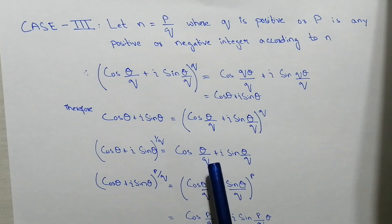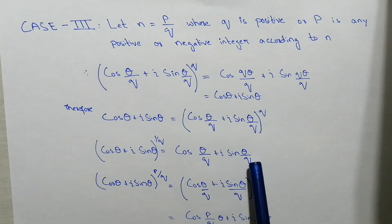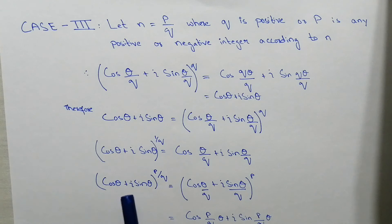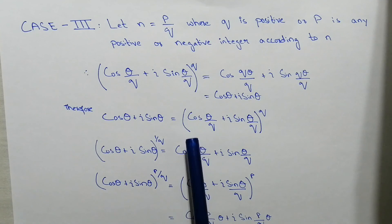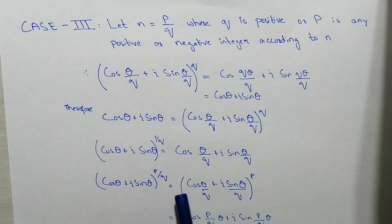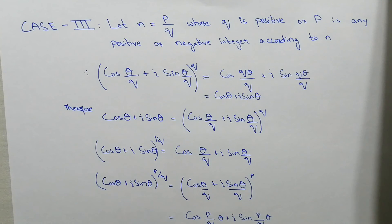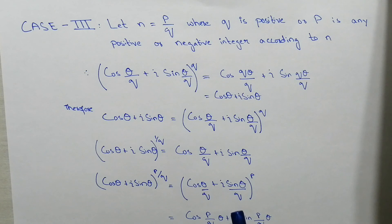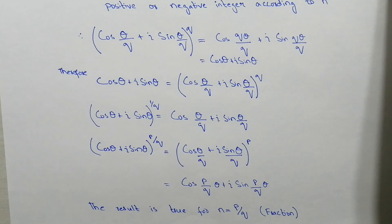Now if we raise both sides to the power 1/q, we get (cos θ + i sin θ)^(1/q) = cos(θ/q) + i sin(θ/q). Then raising both sides to the power p gives (cos θ + i sin θ)^(p/q) = (cos(θ/q) + i sin(θ/q))^p. Applying the same technique, bringing p inside, we get cos(pθ/q) + i sin(pθ/q). So the result is true for n = p/q fraction.